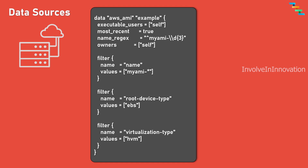The name_regex is a filter to filter the name with a regular expression. 'owners' set to 'self' means the current account ID. There are also other filters such as name, root device type, and virtualization type — so we get a single AMI ID satisfying all conditions. One key thing to note: the data block does not create any resources like the resource block. Instead it is used to fetch information about existing resources, which may or may not have been created by Terraform itself.